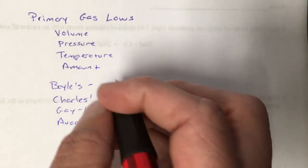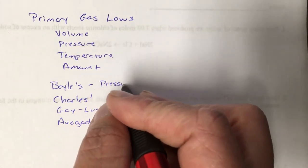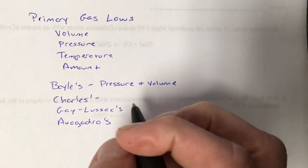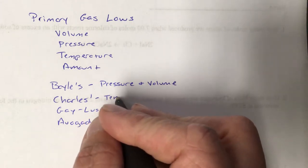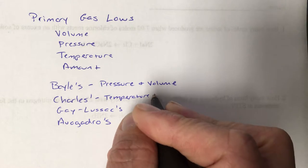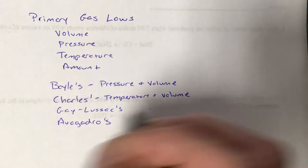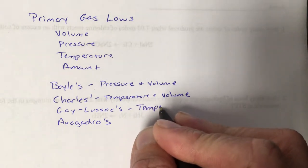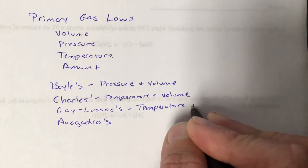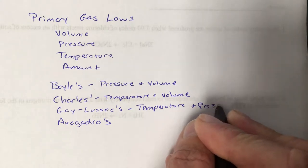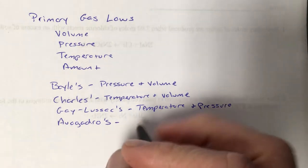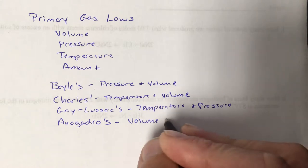Boyle's law examines the relationship between pressure and volume. Charles' law examines the relationship between temperature and volume. Gay-Lussac's law examines the relationship between temperature and pressure. And Avogadro's law examines the relationship between volume and amount.